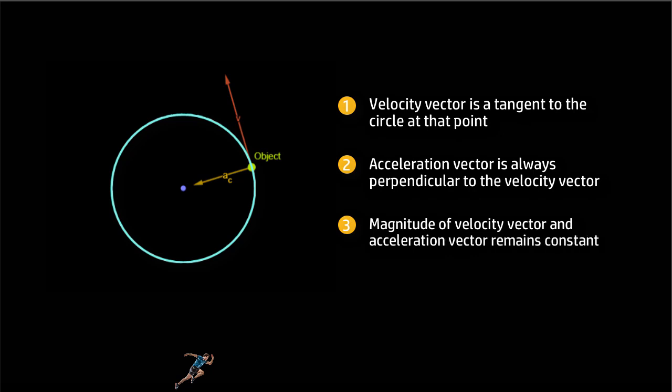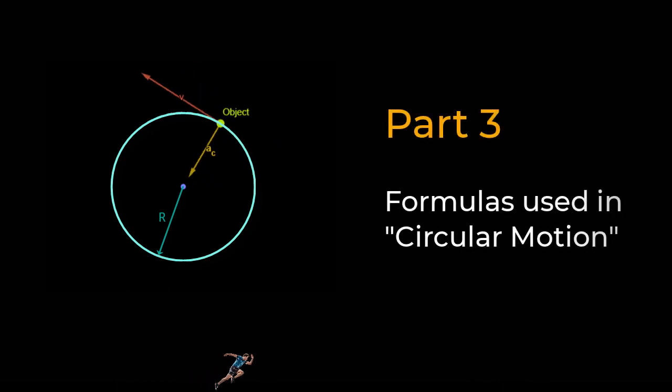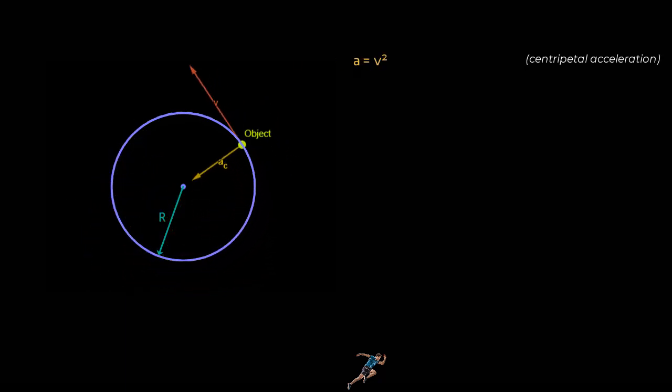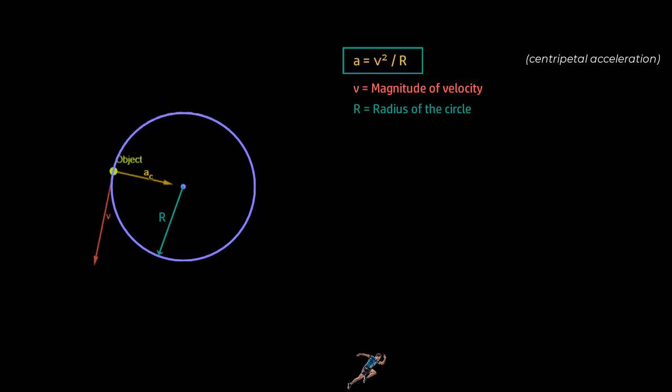So let us go ahead and explore all the formulas you would require to solve numerical problems. And number one is the magnitude of the acceleration, also called the centripetal acceleration. And that is given as a is equal to v square upon r, where v is magnitude of velocity and r is the radius of the circle in which the object is moving.